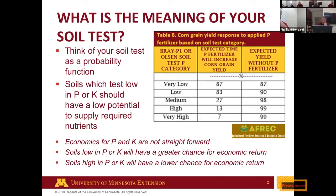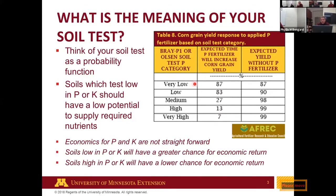Looking at what your soil test number means: at the very low category, 80% of the time we see yield increases for corn and soybean when fertilizer is applied, versus only 7% of the time in the very high category. In the very low category we'd expect about a 13% yield reduction without fertilizing, versus near 100% maximum yield in the high and very high categories. This helps make decisions about where fertilizer will be needed most, especially when considering full economics of fertilization.